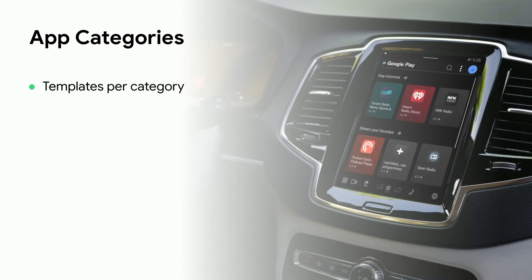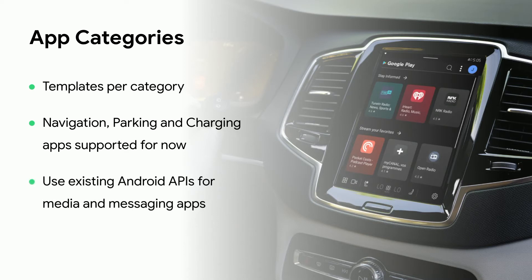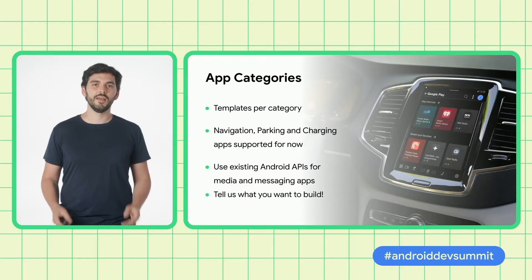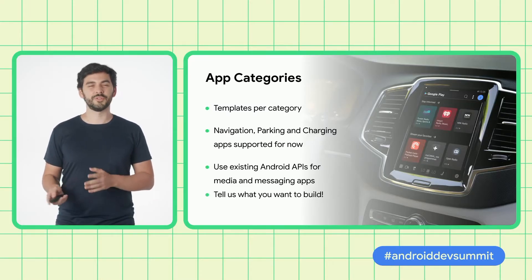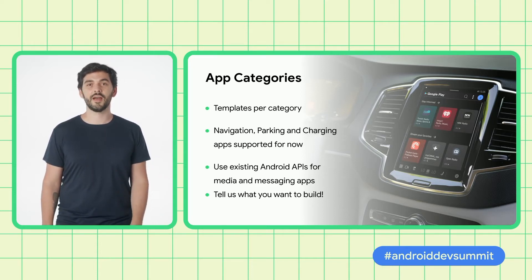Before we jump in, it's important to note that unlike phones where you get full access to the screen, in cars we are providing you with predefined templates that were carefully built with driver safety considerations. Our approach is to expose relevant templates to you according to your app's category, and over time build a cohesive library that allows you to build what you want. We are starting this journey with navigation, parking, and charging apps. Messaging and media apps should keep using existing Android APIs. If you're interested in bringing your apps to cars but don't fall into any of these categories, please reach out to us and let us know what you'd like to see in the Car App Library in the future.